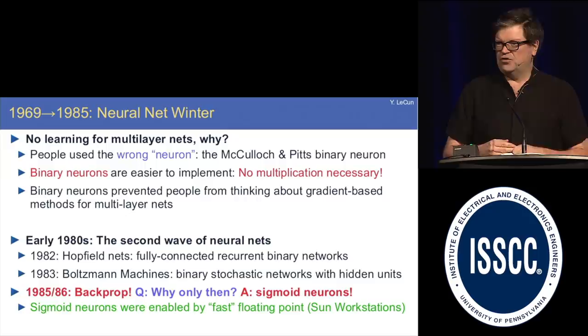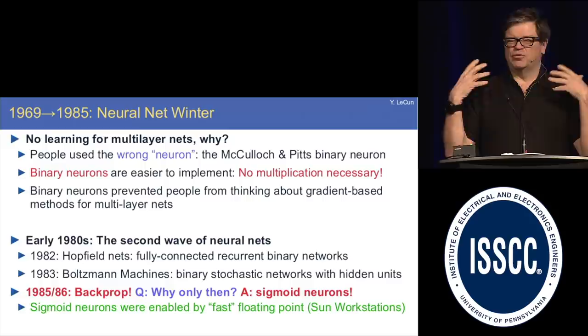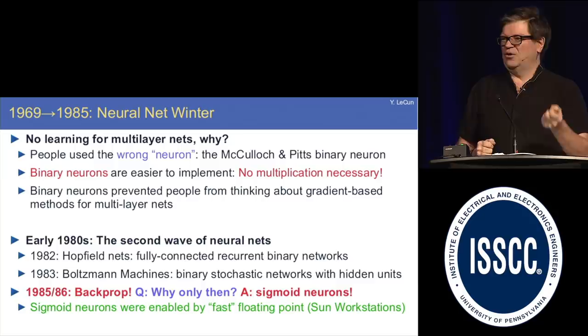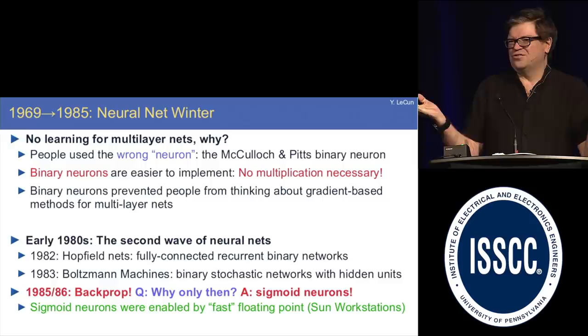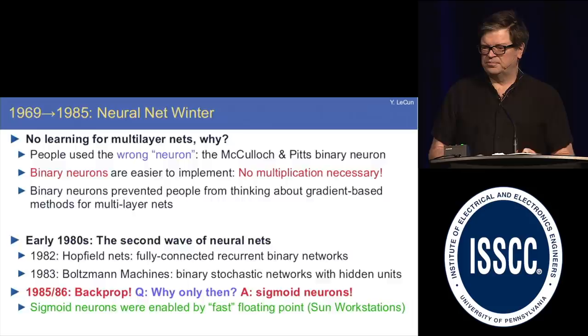That caused a neural net winter from the late 60s to the mid-80s. One reason is hardware: people had the wrong neurons. The neurons being used were binary neurons, and that stopped people from thinking about gradient descent in multilayer systems, because you can't backpropagate gradient through binary neurons. It's only in the early 80s when workstations with decent floating-point performance started to appear that people started thinking it was reasonable to do floating-point multiplication thousands of times in a neural net. That's when backpropagation appeared.